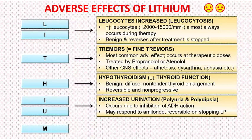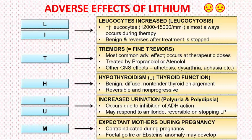The last letter M refers to expectant or pregnant mothers. Lithium is contraindicated during pregnancy because if given during pregnancy, Lithium may cause fetal goiter or Ebstein's anomaly. Ebstein's anomaly is a unique anomaly characterized by tricuspid atresia in the newborn.